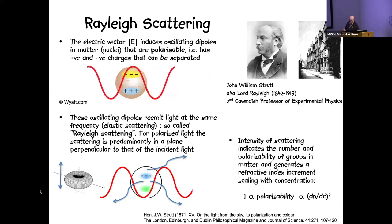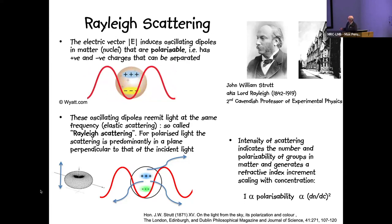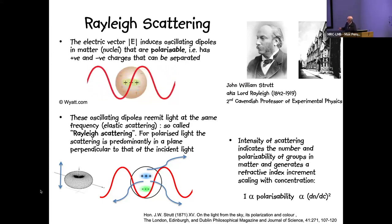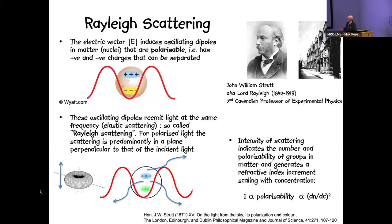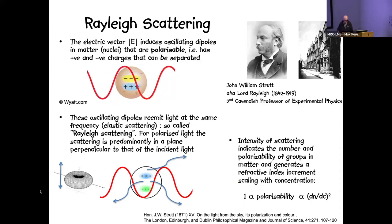For polarized light, the scattering is predominantly in a plane perpendicular to the incident light. The intensity of scattering indicates the number of polarizable groups within the particles you are studying. More polarizable substances change the refractive index more strongly, and this refractive index change scales with concentration. In short, the intensity of scattered light is proportional to the polarizability of the substance, which is proportional to the change in refractive index with concentration.